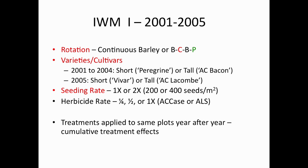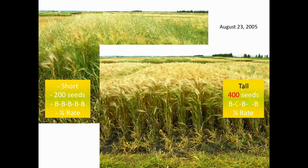Our first integrated weed management study had three main treatments: rotation, varieties (trying to plant a competitive variety versus a less competitive one), and seeding rate (normal versus double). Looking at pictures from year five—when you had very little good agronomic management and tried to get away with a very low herbicide rate five years in a row, wild oats took over in continuous barley with an uncompetitive variety and low seeding rate. But with the same herbicide regime, a plot is essentially clean: just doubled seeding rate, rotation with canola and peas, and taller more competitive varieties.